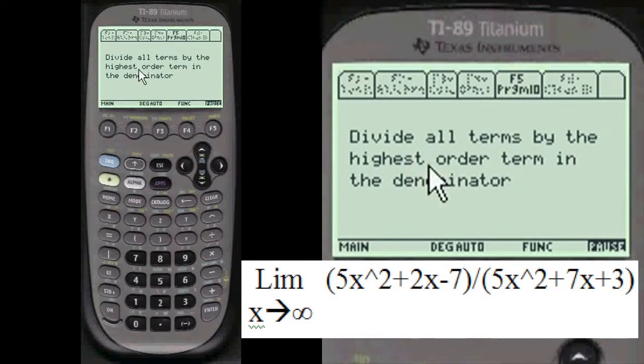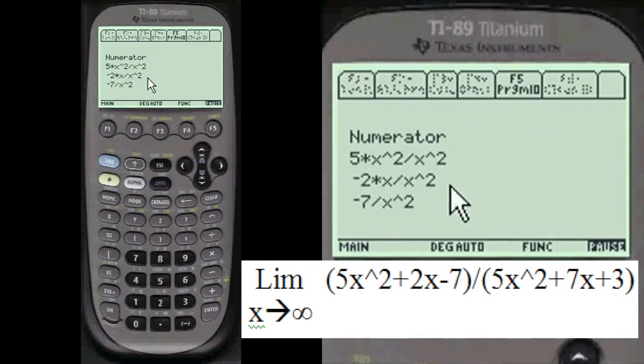We divide all the terms by the highest order term in the denominator, that was X squared. So here's the numerator terms here on the left, and here we're dividing it by X squared.